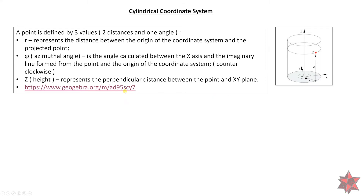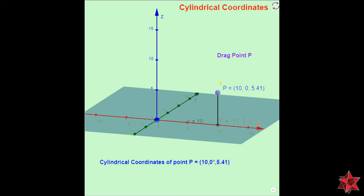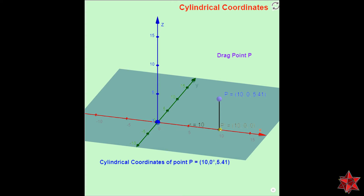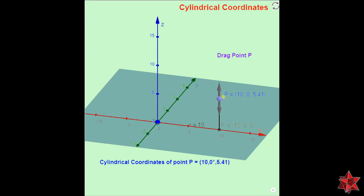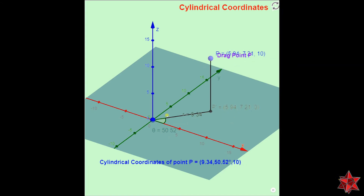In this example of the cylindrical coordinate system, the point is defined by r, the radius. As we see here, r is now 10 — so that's 10 millimeters in radius. If we move it left and right, we can see the value of r changes. It's also represented by the height, the Z axis — if we move it up and down, the Z value changes. And it's also represented by the azimuth angle: if we move the point between the X and Y axes, the azimuth angle here changes.